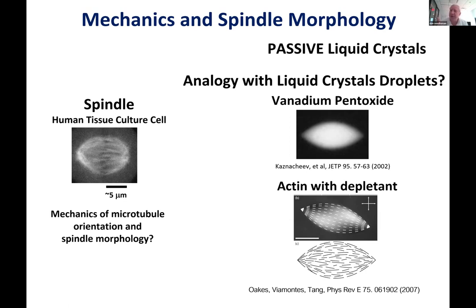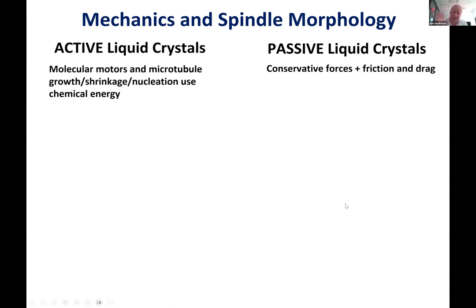However, these examples are passive liquid crystal droplets, whereas the spindle is an active liquid crystal. In passive liquid crystals you only have conservative forces and friction. In the case of the spindle, you have molecular motors, microtubules growing and shrinking and nucleating — all of which use chemical energy. People have formulated continuum theories for both active and passive liquid crystals, which can be quite complex.